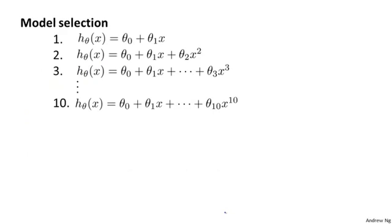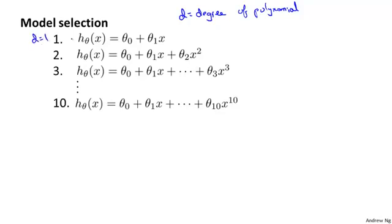Now let's consider the model selection problem. Let's say you're trying to choose what degree polynomial to fit to data — a linear function, a quadratic function, a cubic function, all the way up to a tenth order polynomial. It's as if there's one extra parameter d, which represents what degree of polynomial you want to pick, in addition to the theta parameters.